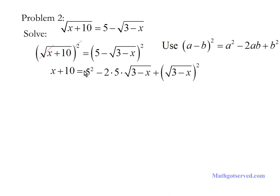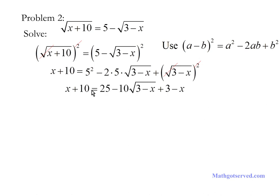Applying the formula: a squared is 5 squared; 2ab is 2 times 5 times the square root of 3 minus x; plus b squared, which is the square root of 3 minus x, squared. Simplifying, on the right side we are squaring a square root again, so those cancel out. That leaves us with 10x plus 10 on the left, and on the right: 25 minus 10 times the square root of 3 minus x, plus 3 minus x.